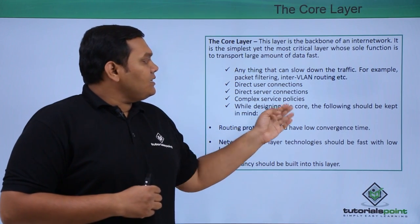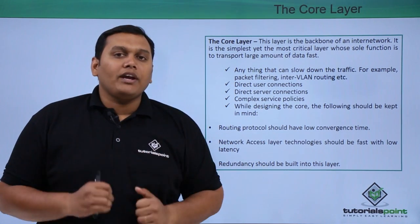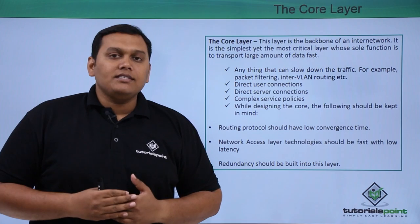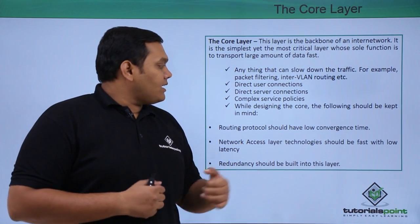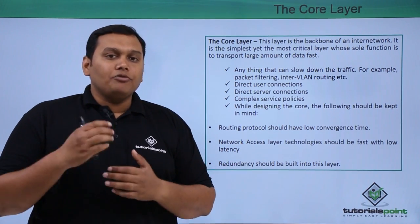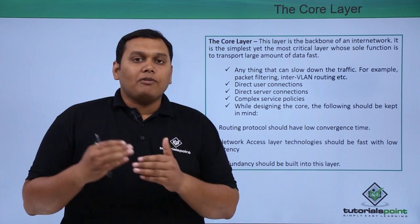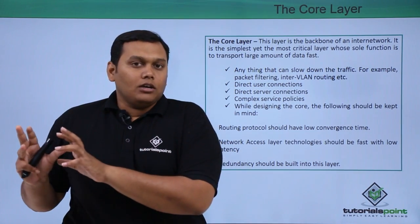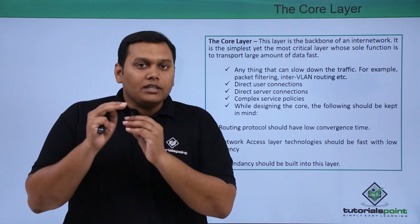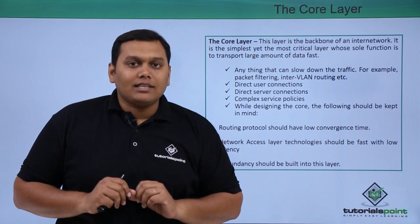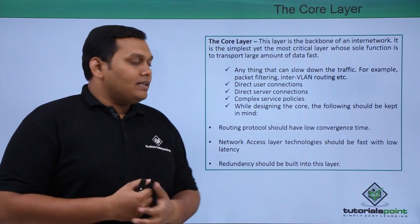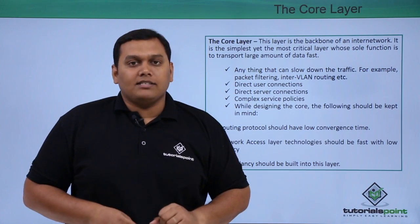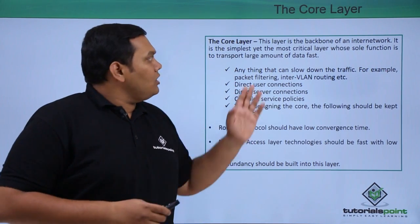When designing the core layer, you should keep some very important points in mind. Routing protocols should have low convergence time, and network access layer technologies should be fast with low latency — meaning connections should complete in less time so there is no lag. Redundancy should also be built into this layer, meaning you should have two alternate connections so when one goes down, the other works.